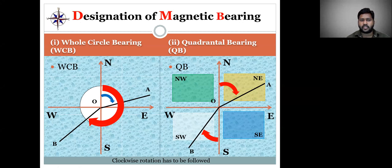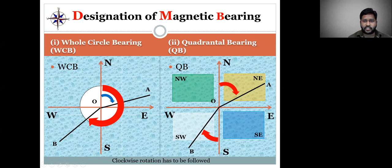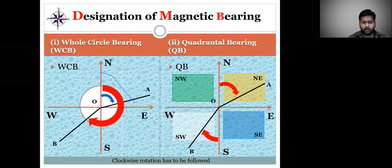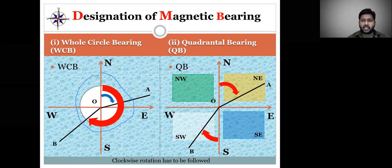What is Whole-Circle Bearing? In Whole-Circle Bearing, the bearing of a line is measured always in the clockwise direction. When measuring bearings in Whole-Circle Bearing, we measure clockwise — that is north to east, east to south, south to west, and west back to north. We measure the bearing with reference to the meridian.